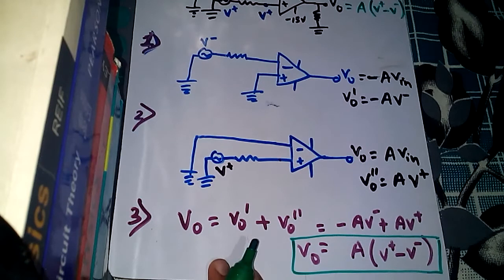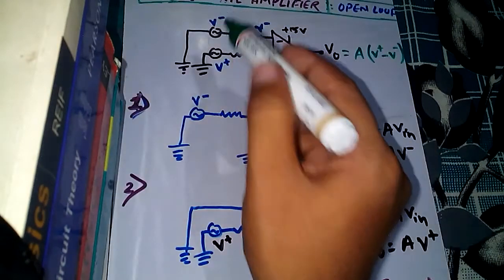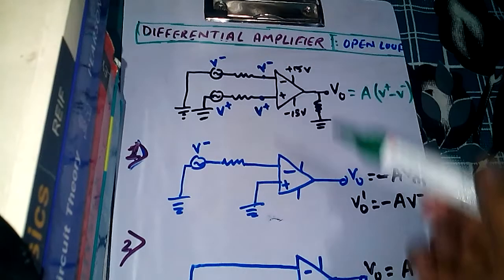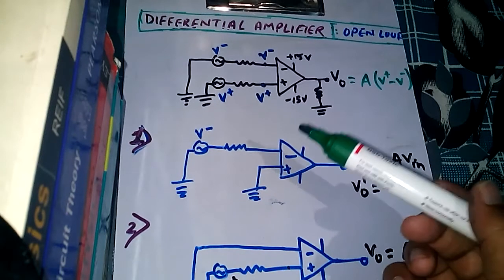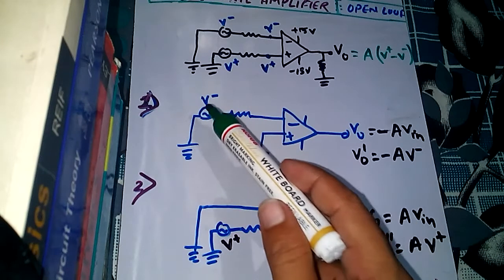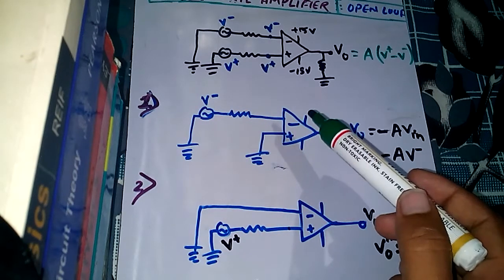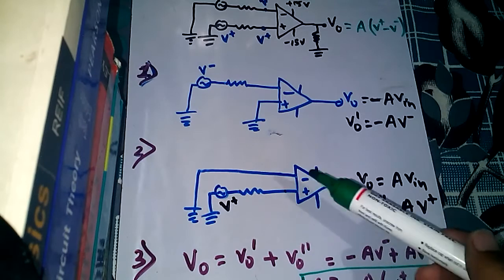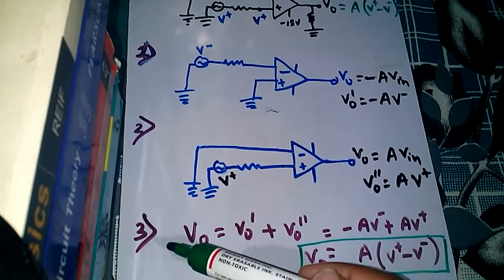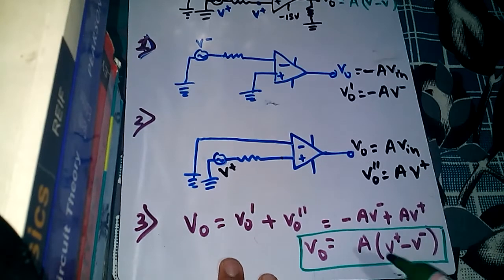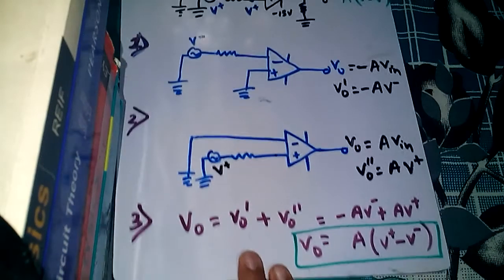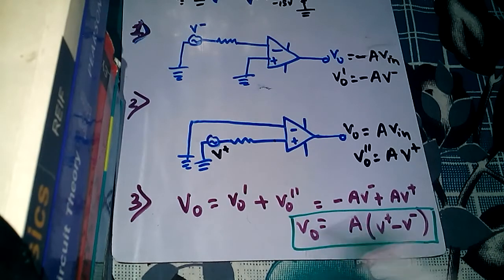So we use the Principle of Superposition whenever two input signals are present, as is the case for a differential amplifier. In the first condition we ground the positive terminal and consider only the voltage at the negative terminal. In the second condition we ground the negative terminal and consider only the voltage at the positive terminal. In the third step we add the two outputs. The final result matches what we already knew the output formula to be — and we have now derived it using the Principle of Superposition.